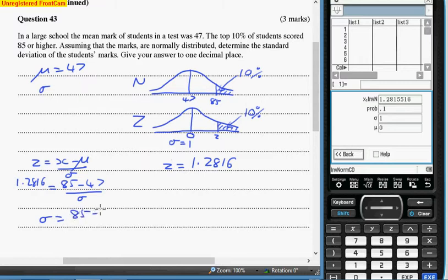So you get that. Of course, 85 minus 47. And I've got 1.2816. Slow down. 1.2816.